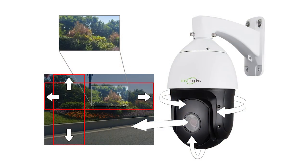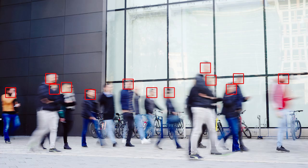PTZ cameras are highly beneficial for large-scale surveillance systems due to their versatile features. They can cover a large area, since the pan and tilt functions allow operators to remotely control the camera's movement. The powerful zoom lenses enable operators to zoom in and capture fine details — particularly useful for facial recognition or any situation where clear visual identification is necessary. You can maintain surveillance over a large area while focusing on a specific target.